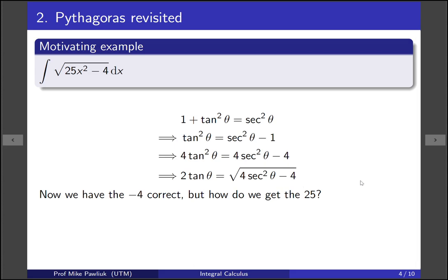So for that we have to do something a little bit different, and that's where our u-substitution comes in. So let's compare what we have with what we want. So we want the 25x squared minus 4 to be equal to the 4 secant squared minus 4.